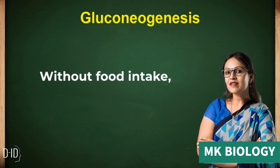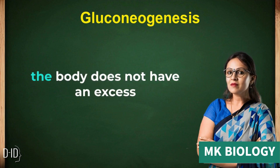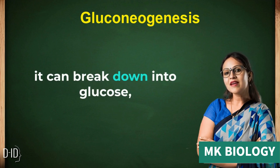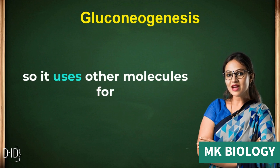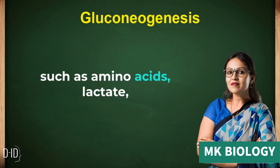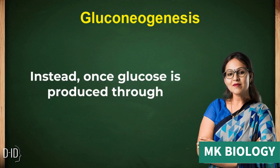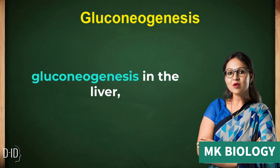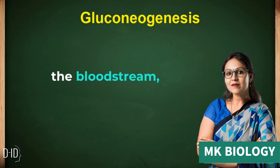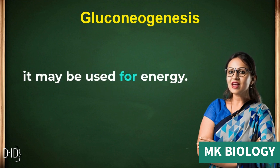Without food intake, blood sugar levels become low. During this time, the body does not have an excess of carbohydrates from food that it can break down into glucose, so it uses other molecules for the process of gluconeogenesis, such as amino acids, lactate, pyruvate, and glycerol instead. Once glucose is produced through gluconeogenesis in the liver, it is then released into the bloodstream, where it can travel to cells of other parts of the body so that it may be used for energy.